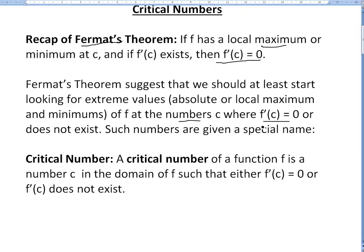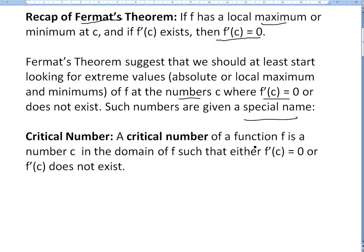Such numbers are given a special name — they're called critical numbers. A critical number of a function f is any number c in the domain of f such that the derivative is either equal to 0 or does not exist.